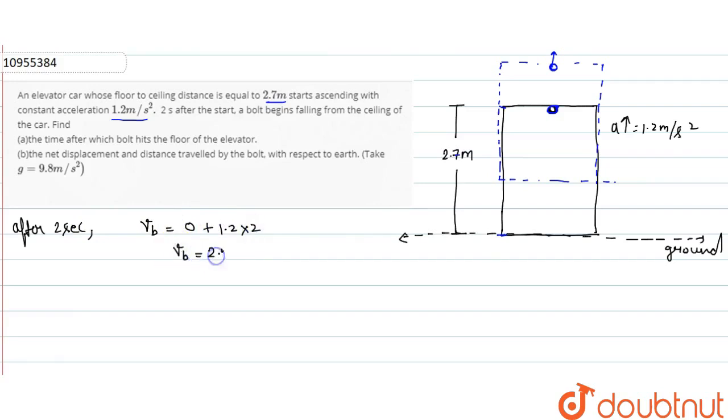The bolt's velocity is also 2.4m per second, same velocity as the lift, velocity of elevator. The distance which we traveled is 0 plus half acceleration 1.2 into 4, so s value is 2.4 meter. Okay, what we have seen...